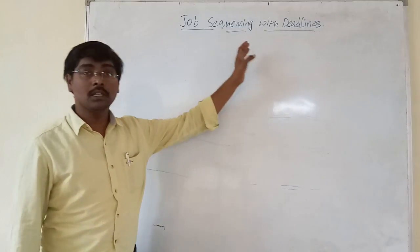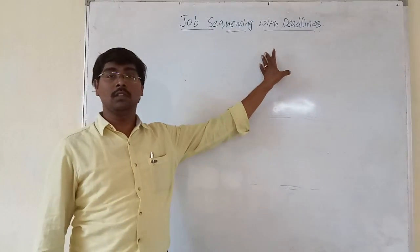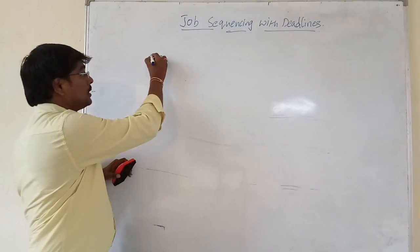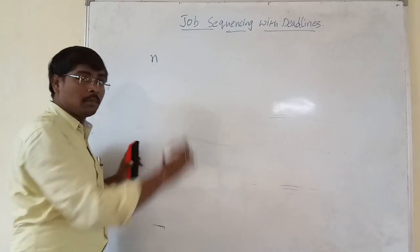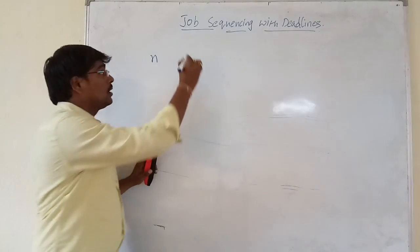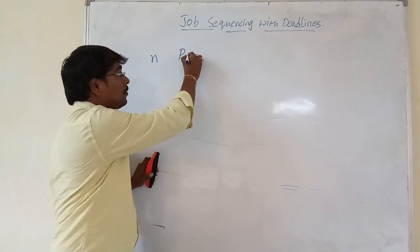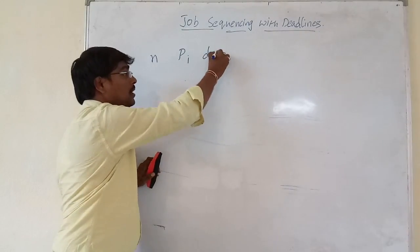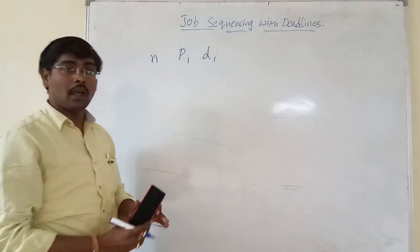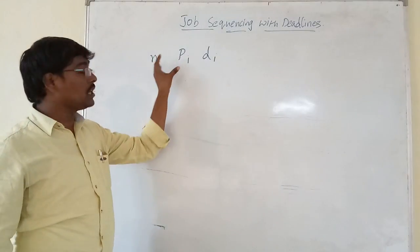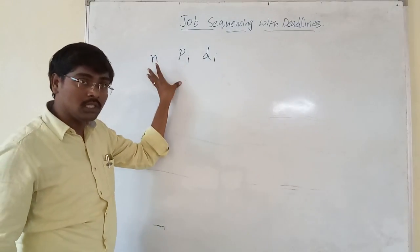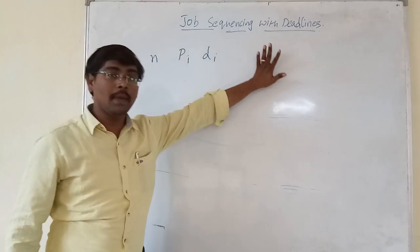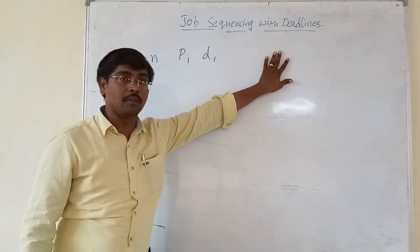Hi friends, today our topic is job sequencing with deadline. Consider N number of jobs, each job having a profit P_i and deadline D_i. Our objective is to execute these jobs within their deadline to get maximum profit.